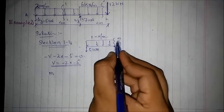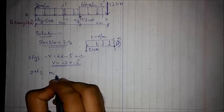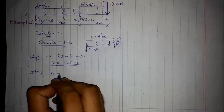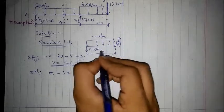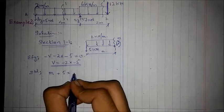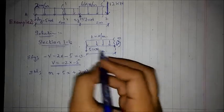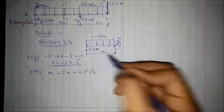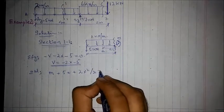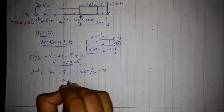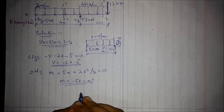For the moment equation, we sum up moments at the cut point, assuming anticlockwise as positive. Sum of moments equals 0: the anticlockwise moment plus 5 times x, plus 2x times x/2 (since the area under the rectangular load gives us the force and the lever arm is at half the distance x). The moment equation becomes M equals minus 5x minus x². The limits of these two equations are 0 to 4.